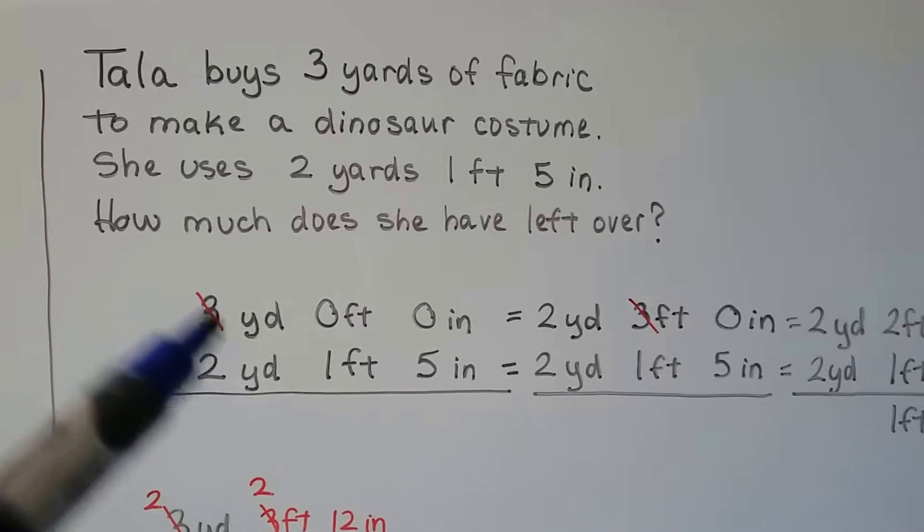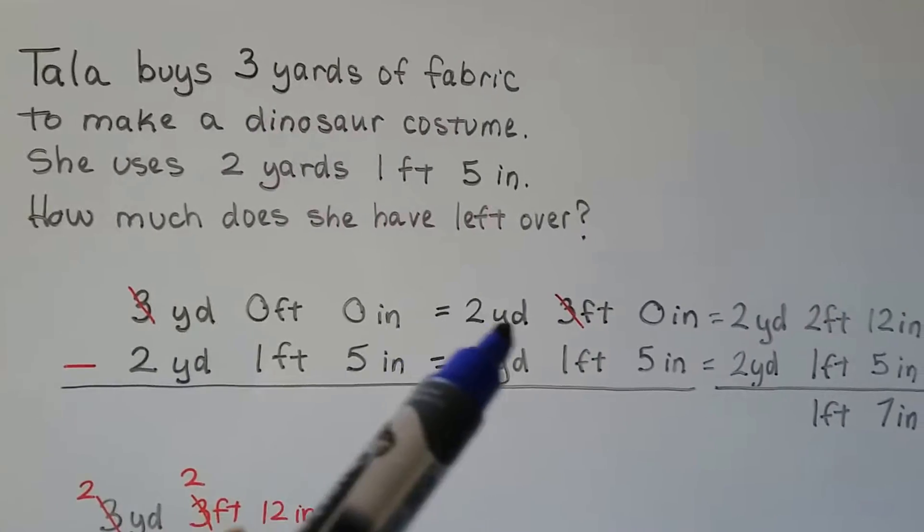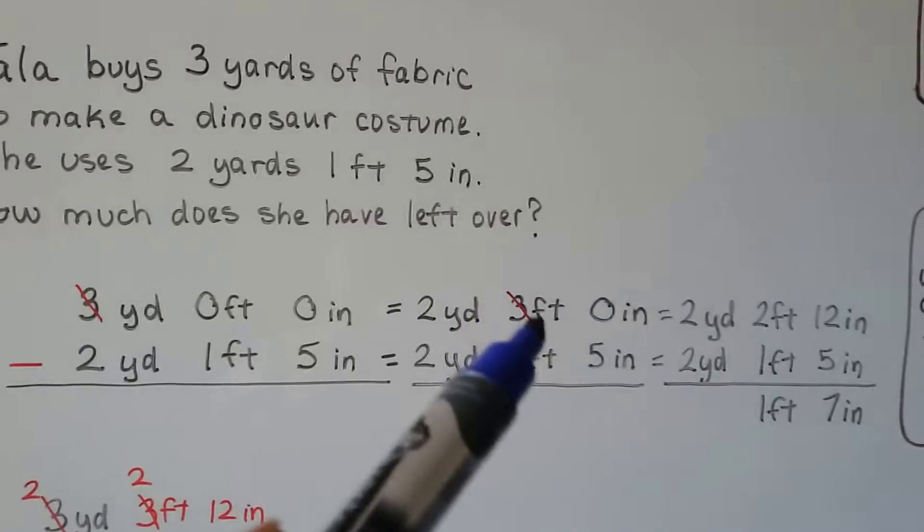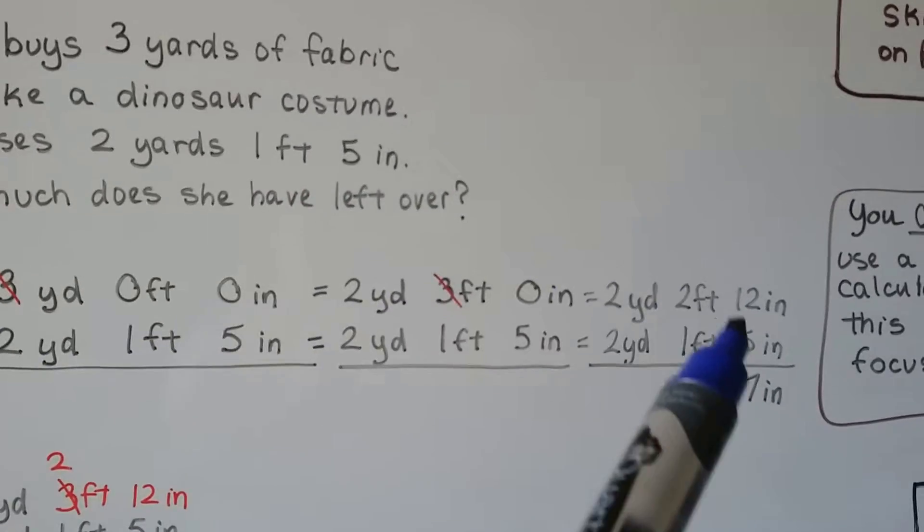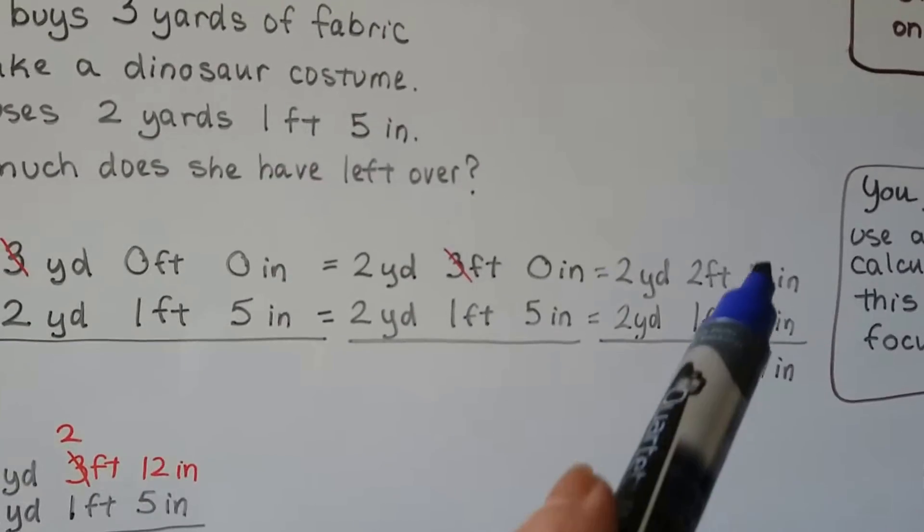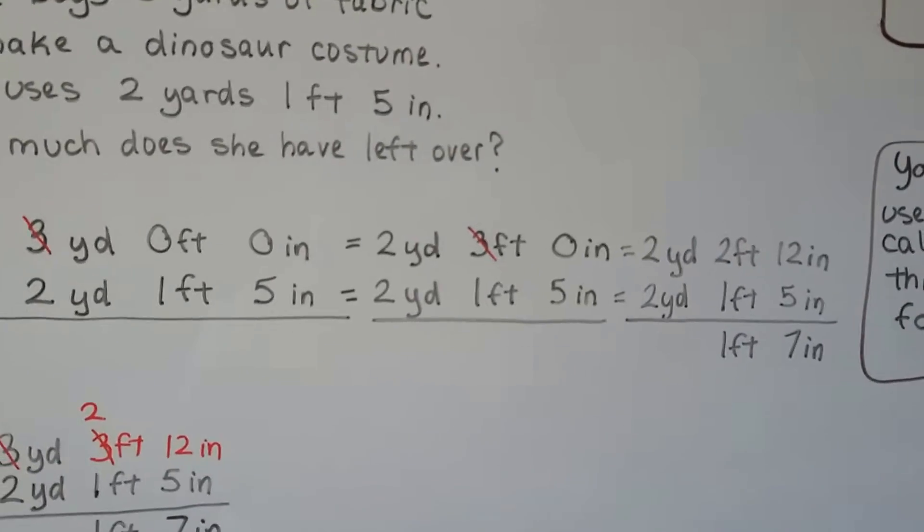We can regroup and take one of the yards, turn it into 2 yards, and then give it to the feet as 3 feet. Then we can take a foot from the feet and give it to the inches as 12 inches. Then 12 minus 5 is 7, and 2 minus 1 is 1. We have 1 foot 7 inches left over.